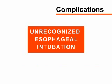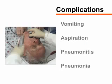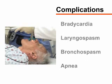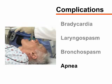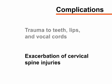The most serious complication of endotracheal intubation is unrecognized esophageal intubation, which may lead to hypoxemia, hypercapnia, and death. Laryngoscopy can provoke vomiting and aspiration of gastric contents, causing pneumonitis or pneumonia. Additional complications include bradycardia, laryngospasm, bronchospasm, and apnea due to pharyngeal stimulation. Trauma to teeth, lips, vocal cords, and exacerbation of cervical spine injuries can also occur.